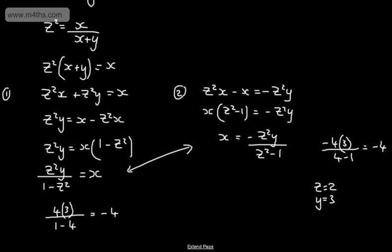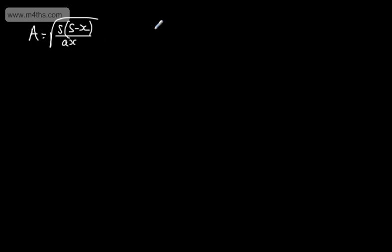Let's do another one. We've got uppercase A is equal to the square root of S multiplied by S minus X, all over lowercase a times X. Again, we're going to make X the subject of this formula.